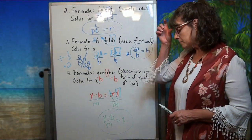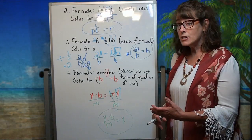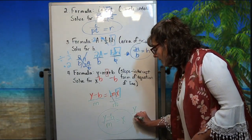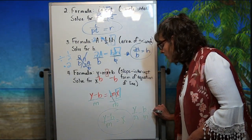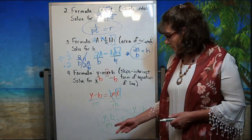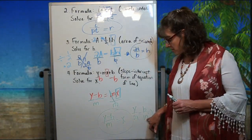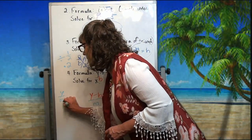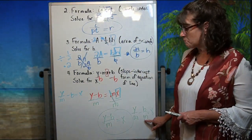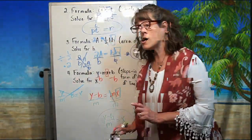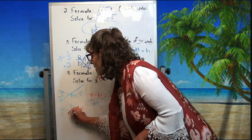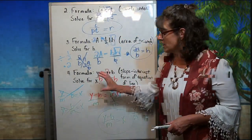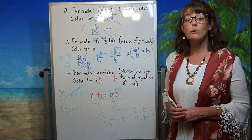If you don't like that form, you can take each term in the numerator and divide it by m, getting y over m minus b over m, which also gives x by itself. But be careful — it's not just y divided by m alone, and it's not just b divided by m alone. Both terms must be divided by m. Just take the whole side and divide by m to get the right answer.